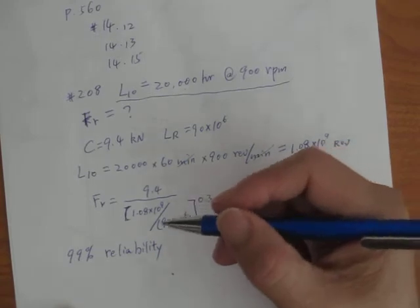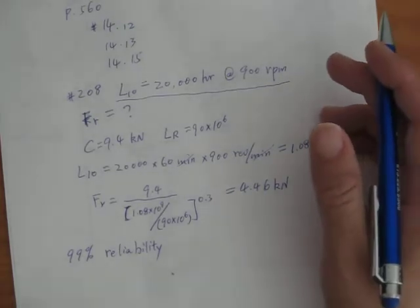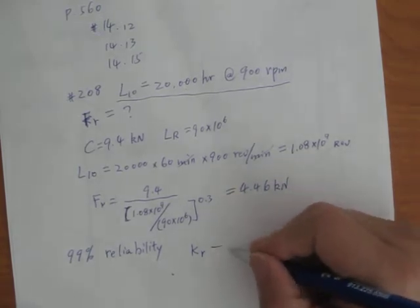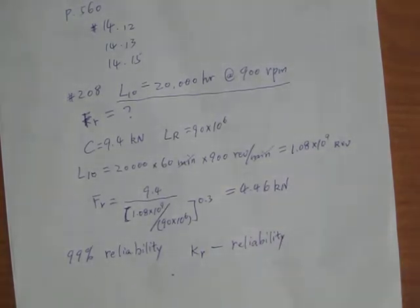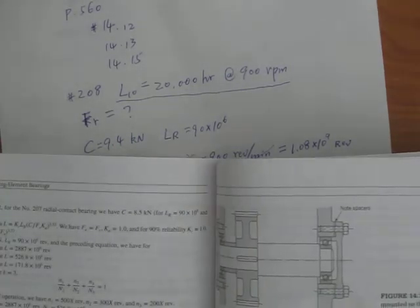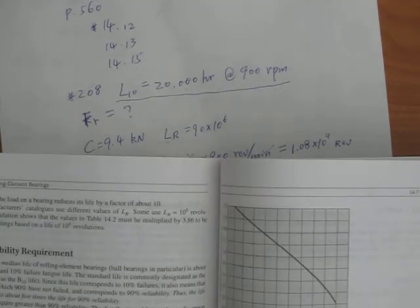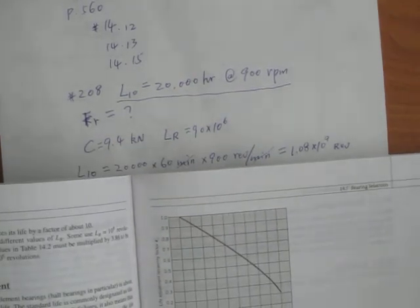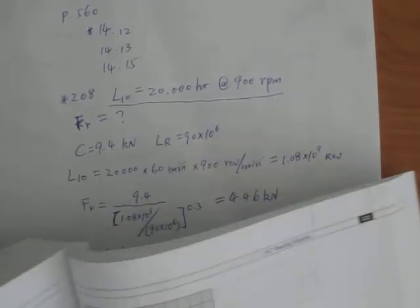In this case we introduce a factor called KR, reliability factor. There's a reliability factor and this factor is on the book. I think it's page 553, I'm gonna put it on page 553.